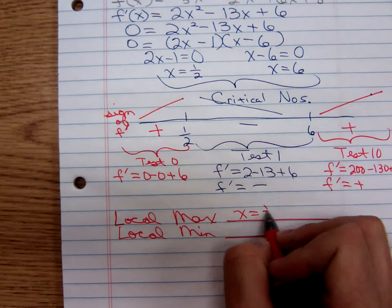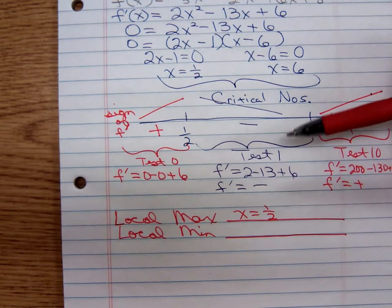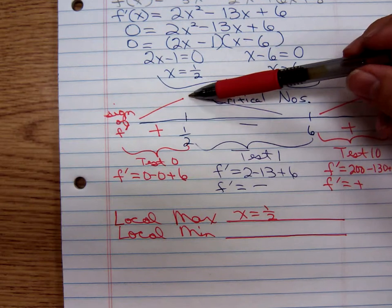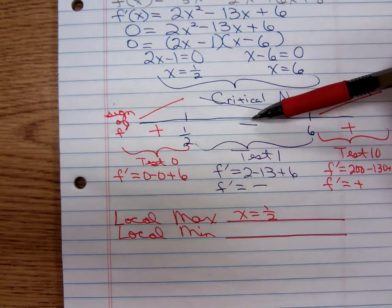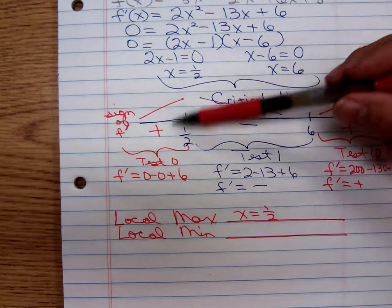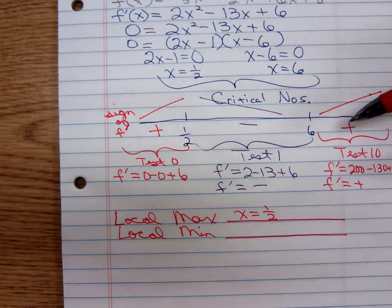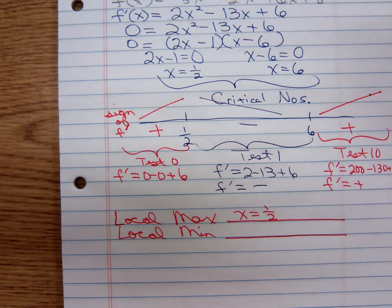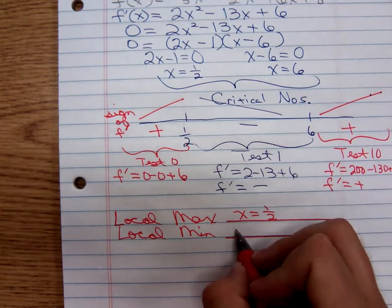A local maximum occurs when the function's increasing to the left of the critical number, and then it starts decreasing. That means the graph has one of those peaks there. Do we have a local minimum? Yes, it occurs when x is equal to six.